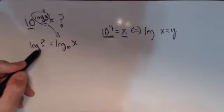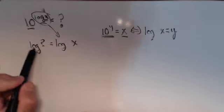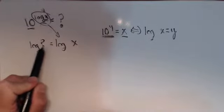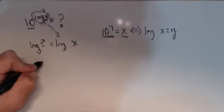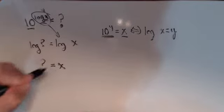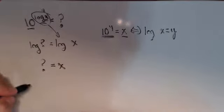Now again there's no base written here. It's automatically base 10. So if the log of question mark equals the log of x, then question mark equals x. And that shows our property.